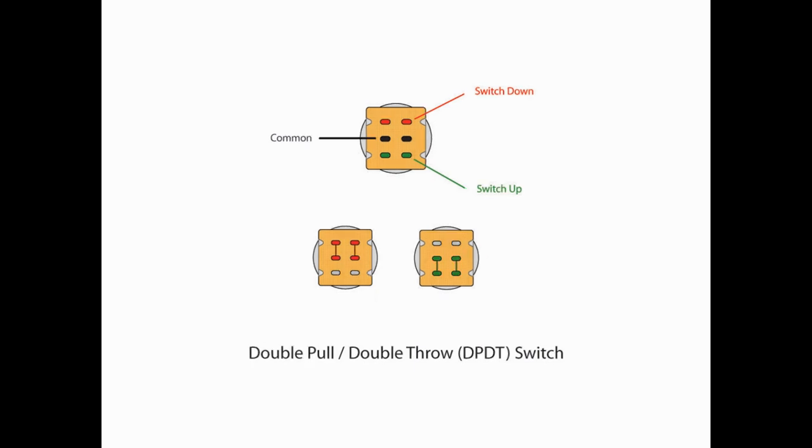Making things more interesting is the double pull double throw switch, which is the DP-DT variety. Basically, if you think about it, it's two single pull switches just put next to each other. We've got the common coming in, and we've got the red as an option, and we've got the green, but it's done in pairs. If I turn the switch down, both sets of the top lugs are going to be activated. If I turn the switch up, I'm going to have the bottom two lugs activated. You can have the left side wired completely foreign or opposite from the right side. You have some variety there.